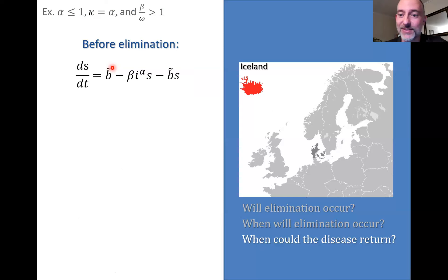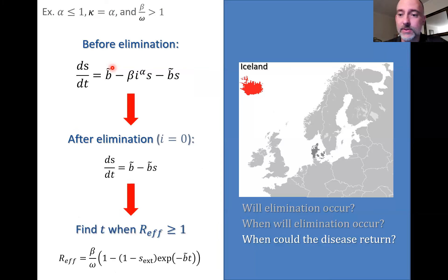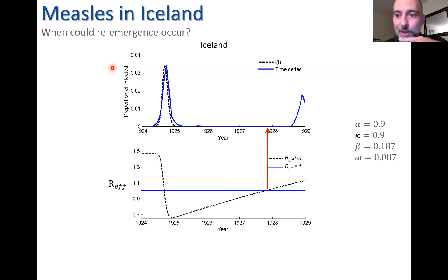Given this equation for R-effective, if we find when it surpasses one, that gives insight into when the disease could potentially return. We know the disease has been eliminated, so I equals zero, and DSDT boils down to a linear differential equation we can solve. We use that in R-effective to get a closed-form expression, then find when it crosses the threshold of one. Looking at the plot of R-effective, it surpasses the critical threshold of one just before 1928—not predicting exactly when the next epidemic occurs, but giving a warning that Iceland should have been sounding alarms and preparing for another measles outbreak.